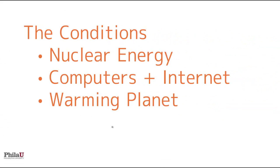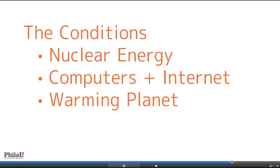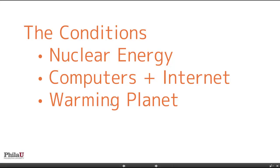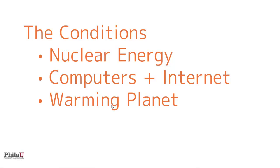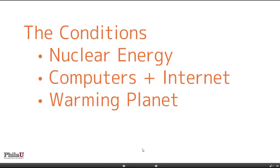We have new energy sources — nuclear energy — which many view as a transitional energy source towards renewables for sustainability. That came out of the horrific event of the nuclear bombs dropped on Hiroshima and Nagasaki. These things always have two sides of a coin. We're looking at computers and the Internet as a form of communication, exponentially allowing people to communicate across the planet. And we're more and more seeing the planet warming and changing, evidence of pollution and destructive forces we've had on the planet. The planet's getting smaller — more people and less space.